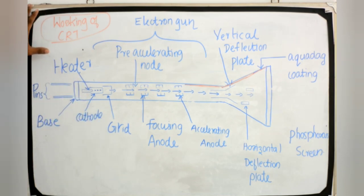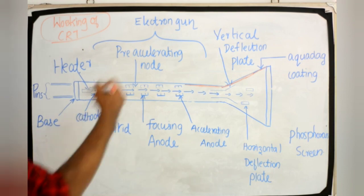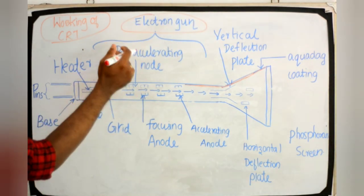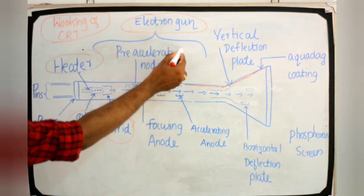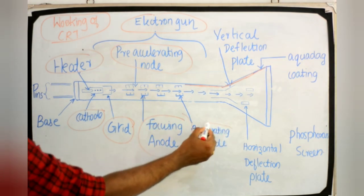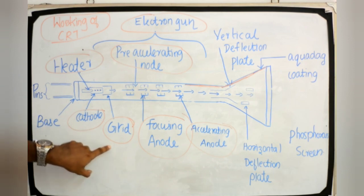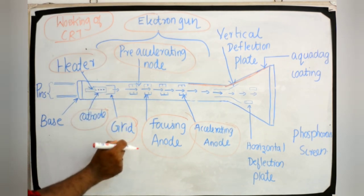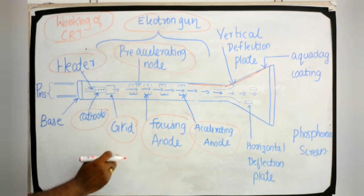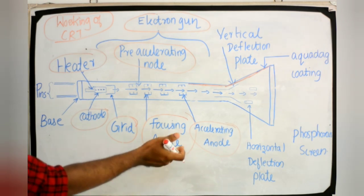The working of CRT depends on the movement of electron beams. The electron gun is the source of electron beams. The electron gun has a heater, cathode, grid, pre-accelerating anode, focusing anode, and accelerating anode. The electrons are emitted from the cathode and pass through the control grid. The beam is focused by the focusing anode.